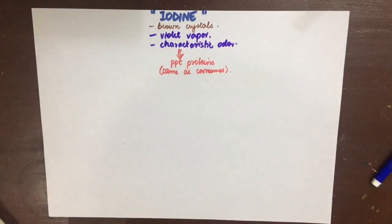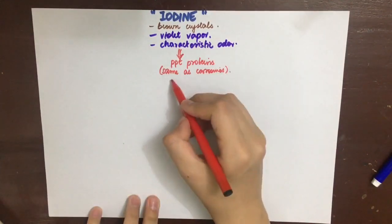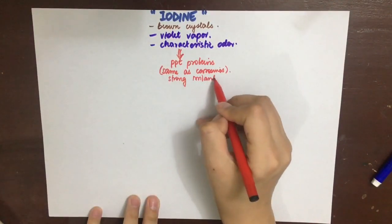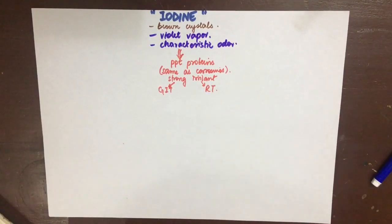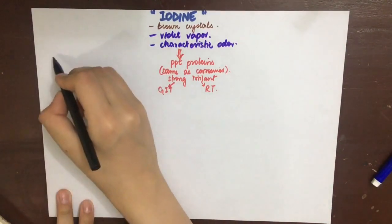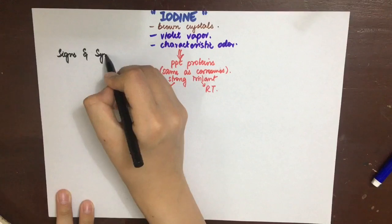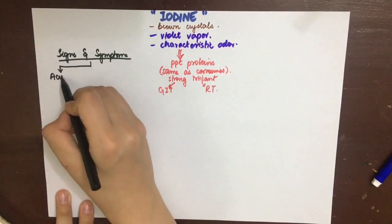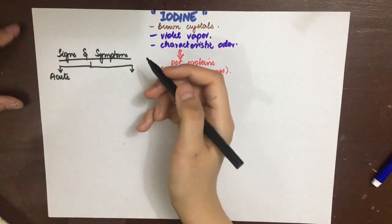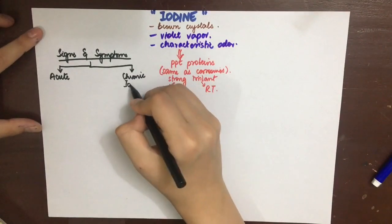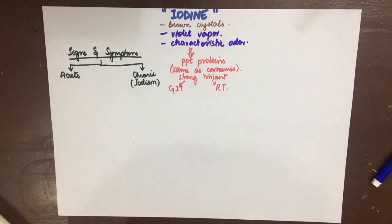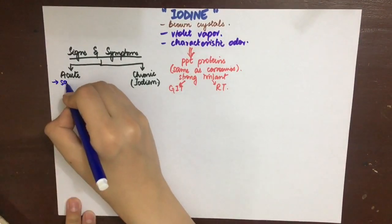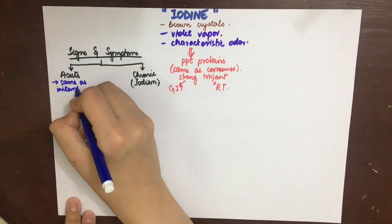The signs and symptoms of iodine poisoning can be divided into acute and chronic poisoning. The chronic poisoning is also known as iodism. The acute poisoning presents the same symptoms as irritant and corrosive poison.